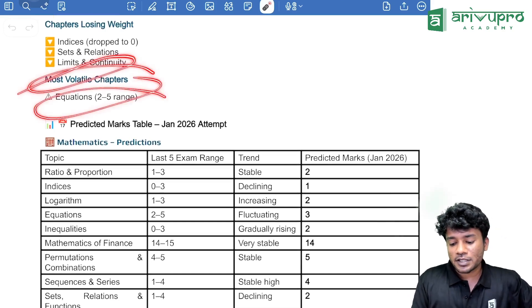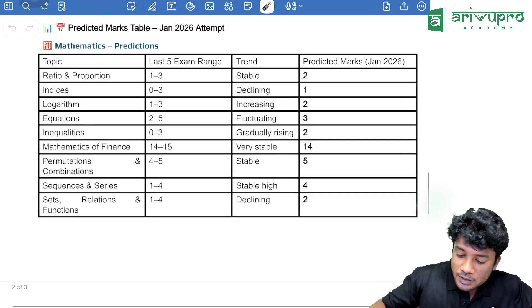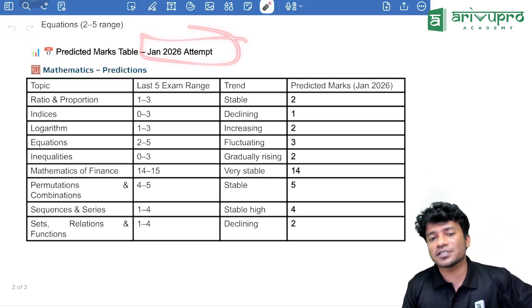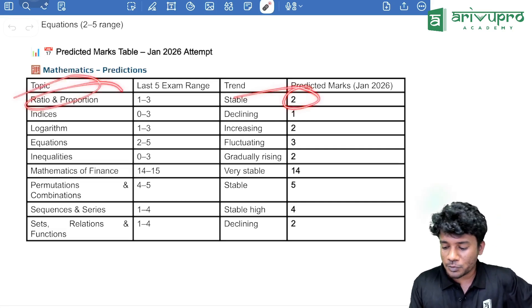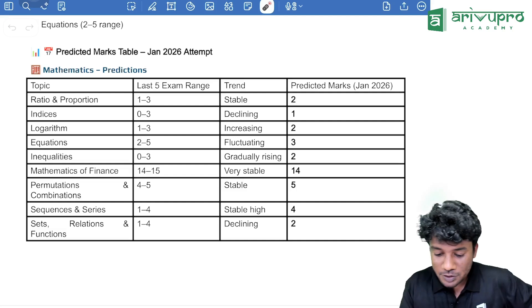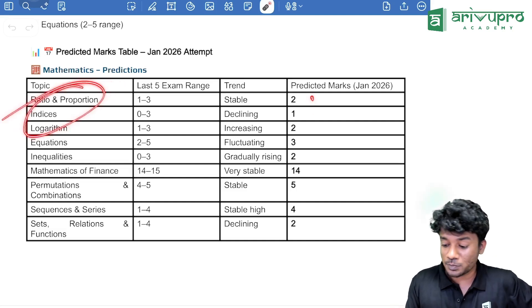Now, coming to the most volatile chapter, that is chapter 2. The range is more fluctuating. Then, our prediction for the coming attempt, that is Jan 2026 attempt is, we can expect up to 2 marks from ratios and proportion, indices 1 mark, logarithm 2 marks. That means, chapter 1 in total, we can expect 5 marks in total from chapter number first. We can expect 5 marks.